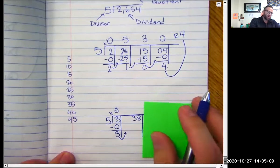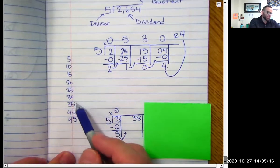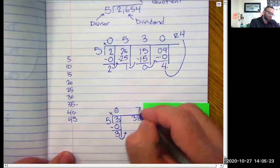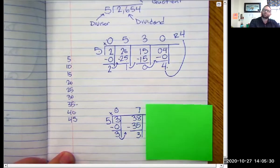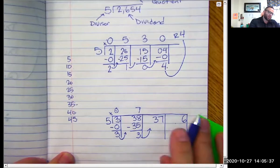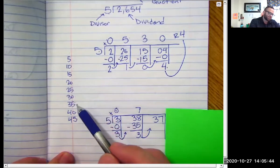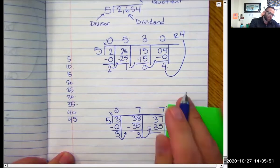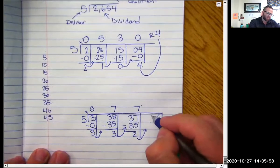Now I'm asking: how many times can I subtract five from the number 38? Seven times — seven times five is exactly 35. I subtract them and I'm left with three. I take that three remainder and move it to the next column in front of the seven. Now I have 37. How many times can I subtract five from 37? Seven times — seven times five is exactly 35. I subtract them and I'm left with two. That two remainder I bring over in front of the six, making it 26.